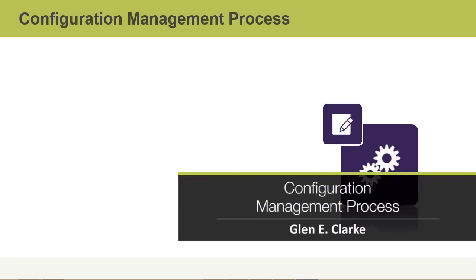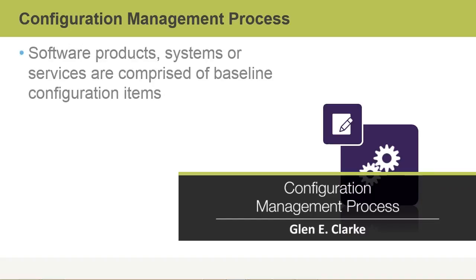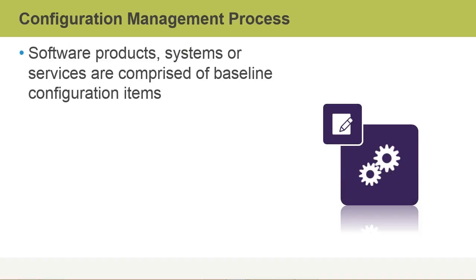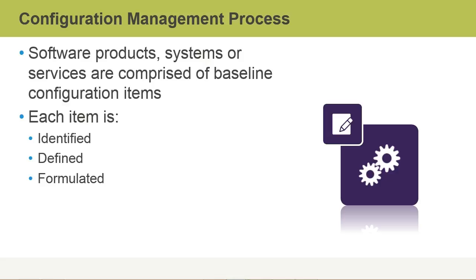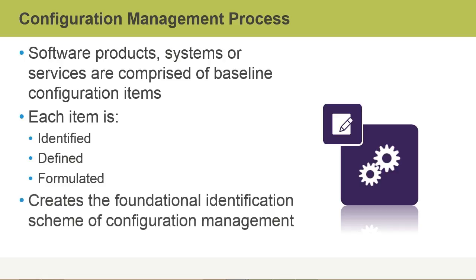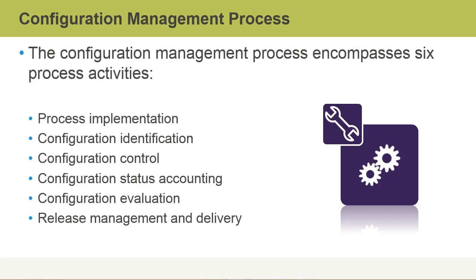In this video, we'll discuss the configuration management process. Software products, systems, or services are made up of baseline configuration items. Each of these items is identified, defined, and formulated. The configuration management process creates the foundational identification scheme for configuration management, which involves each element within the system having its own unique identifying number. A big part of the configuration management process is identifying the scheme for the number that represents all these software elements.